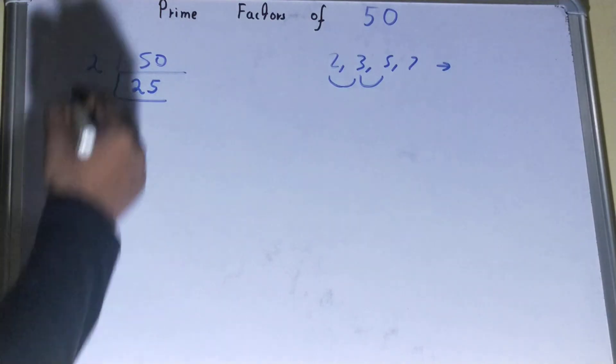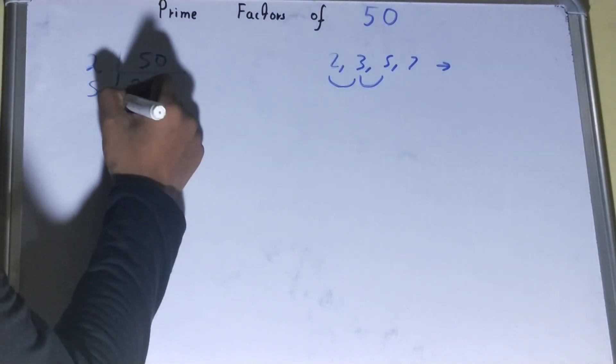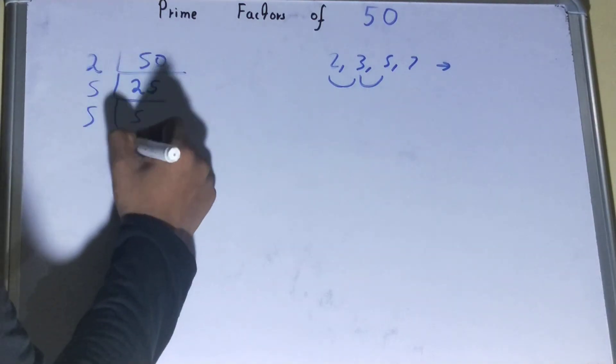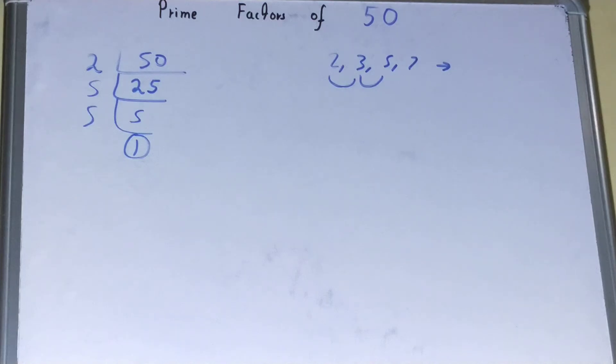So divide it and we'll be left with 5. Again repeat the same process. Is 5 divisible by 5? Yes, it is, and we'll be getting 1. Once you get 1, your work is done.